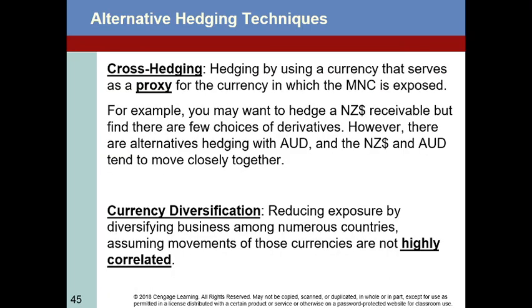Cross-hedging means hedging by using a currency that serves as a proxy for the currency in which the multinational company is exposed. This is another reason you may never find the perfect hedge — it's a mismatch in terms of the amounts, since you don't always find futures or options contracts that exactly line up with the amount of money you're trying to hedge, or the maturity dates don't coincide exactly with the date you're going to receive or pay foreign currency.